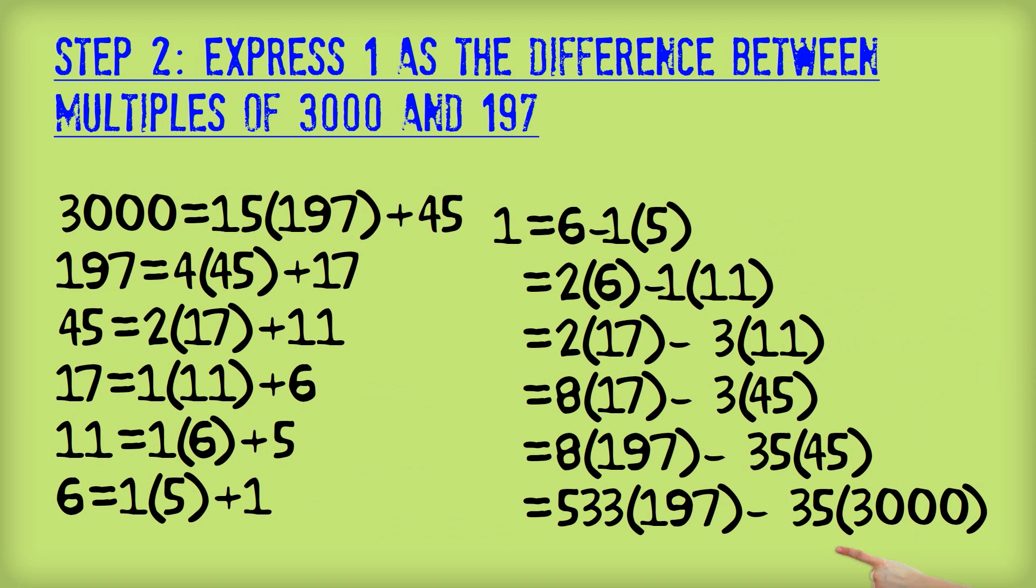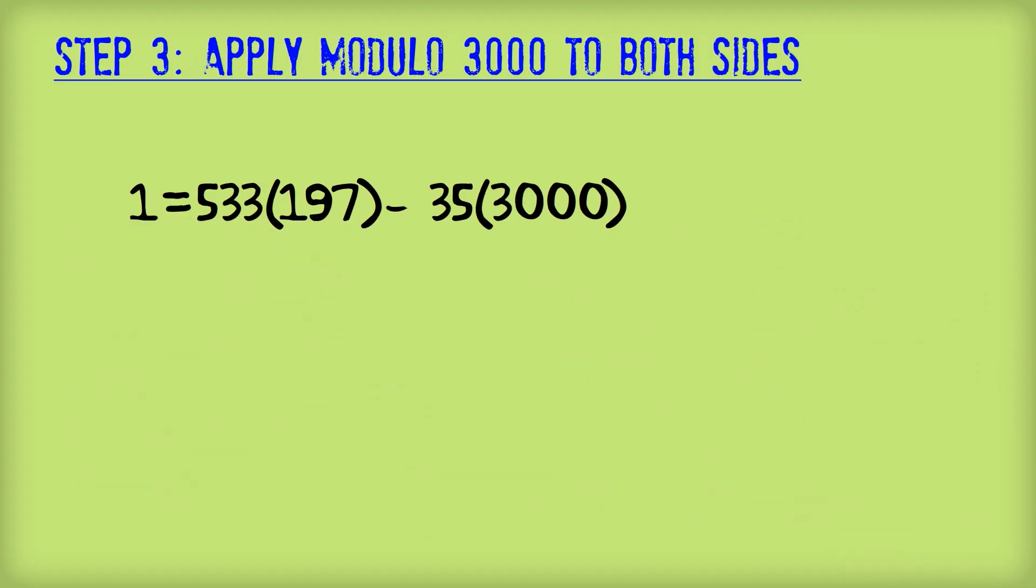where we have 1 equals 533 times 197 minus 35 times 3000. Now we're ready for the final step, step 3. Apply modulo 3000 to both sides.